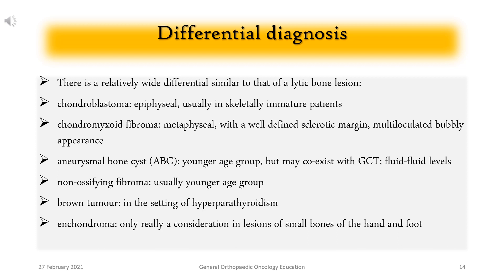Differential Diagnosis: There is a relatively wide differential similar to that of a lytic bone lesion. Chondroblastoma — epiphyseal, usually in skeletally immature patients. Chondromyxoid fibroma — metaphyseal, with a well-defined sclerotic margin and multiloculated bubbly appearance. Aneurysmal bone cyst (ABC) — younger age group, but may coexist with GCT; fluid-fluid levels. Non-ossifying fibroma — usually younger age group. Brown tumor — in the setting of hyperparathyroidism. Enchondroma — only really a consideration in lesions of small bones of the hand and foot.